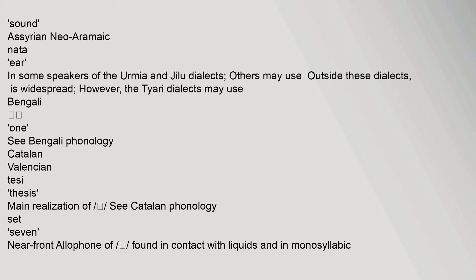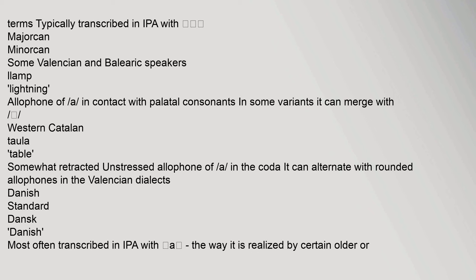Bengali: see Bengali phonology. Catalan Valencian: 'tesi' (thesis) — main realization; see Catalan phonology. Near-front allophone found in contact with liquids and in monosyllabic terms, typically transcribed in IPA with /a/. Majorcan, Menorcan, some Valencian and Balearic speakers: 'llamp' (lightning) — allophone of /a/ in contact with palatal consonants; in some variants it can merge. Western Catalan: 'taula' (table) — somewhat retracted unstressed allophone of /a/.